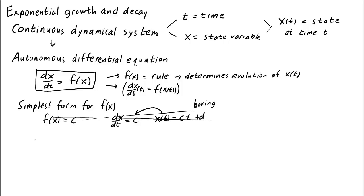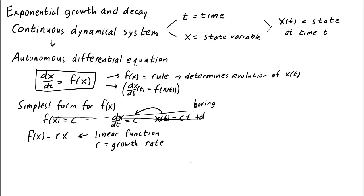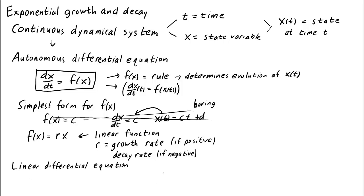Instead, let's look at the next simplest form for f. We could let f of x be a linear function — let's say f of x equals r times x, where the parameter r is the growth rate, at least if positive. If r is negative, then the derivative dx/dt is negative, so x is decreasing; in that case we can call r the decay rate. So our linear differential equation, or linear continuous dynamical system, is dx/dt equals r times x, where we just plug this f into the differential equation.